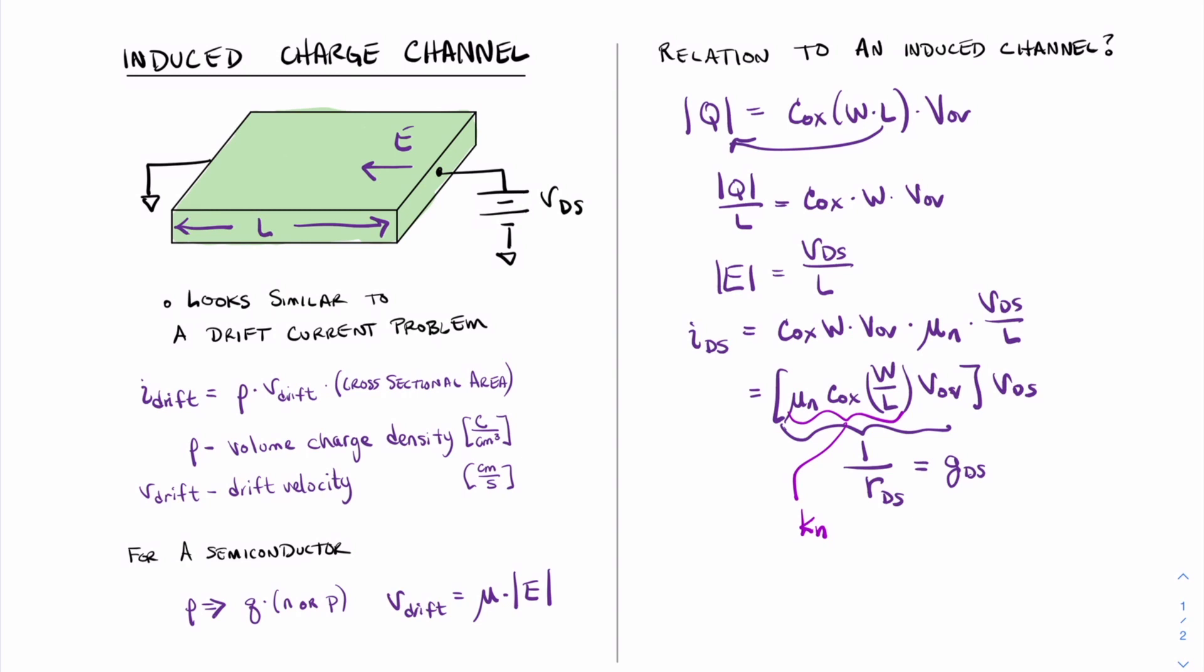Therefore, we can actually write the final equation in terms of these simplifications. We can say that IDS, with a small value of voltage from drain to source with a rectangular shaped induced channel, is equal to kn VOV VDS. And this is our final equation.